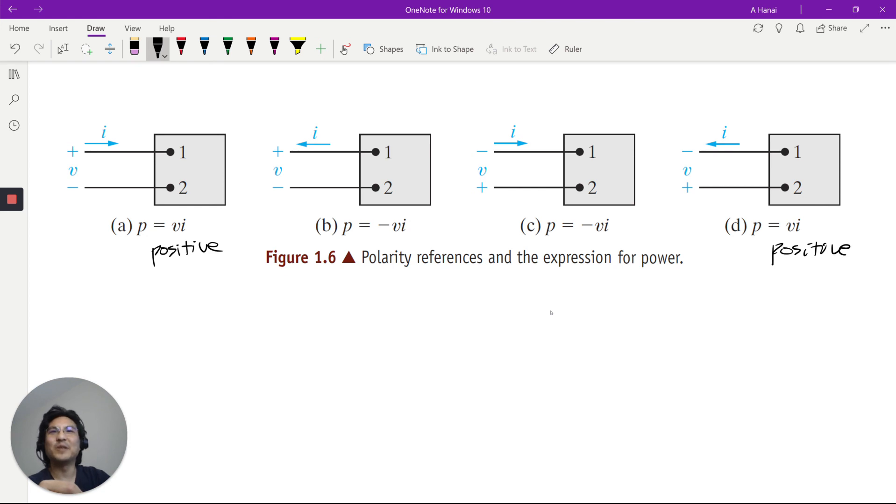But now let's take a look at this. Voltage drop from one to two, but then the current is going from two to one. See how that's backwards? That's why there's a minus sign over here. Over here.